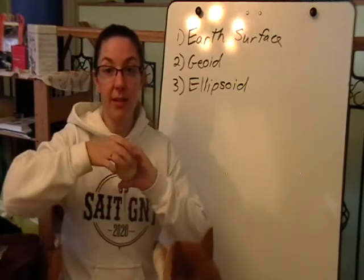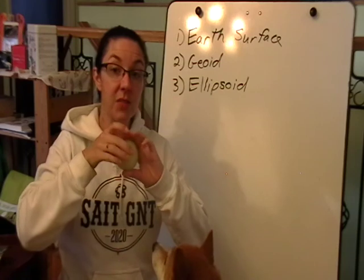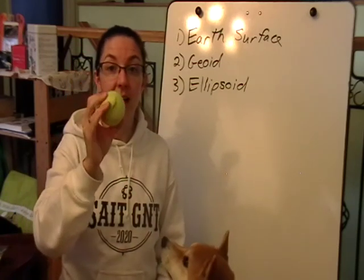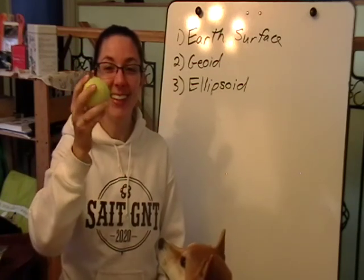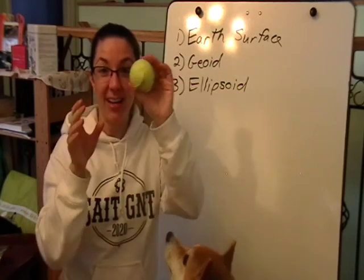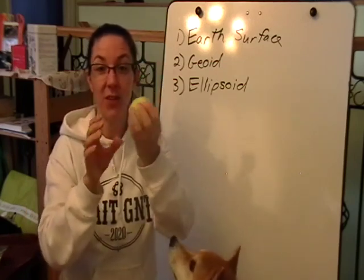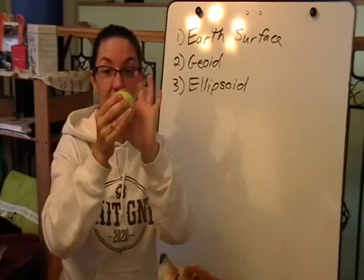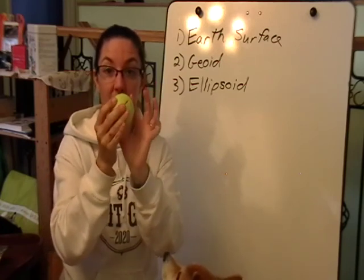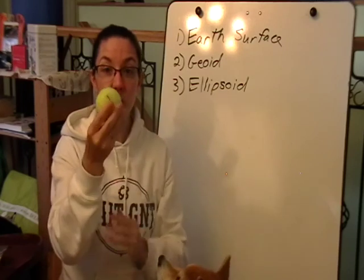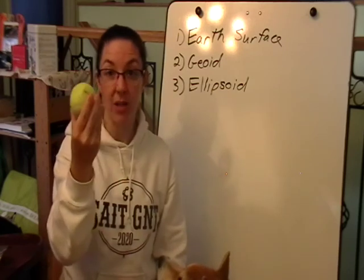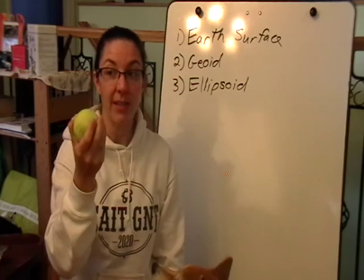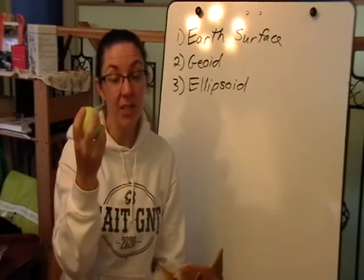The tennis ball represents a sphere — a perfect sphere. It's equal all the way around; the radius is going to be the same no matter where you look on the ball. This is how most globes are actually created. But what we're really looking for is the real shape of the earth.